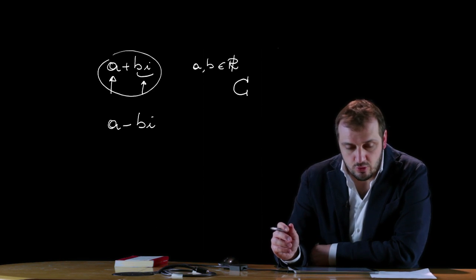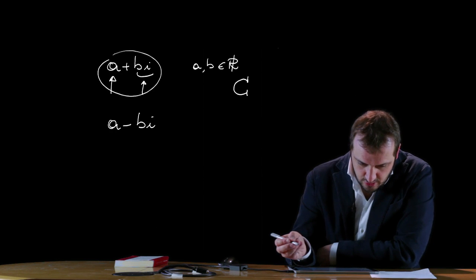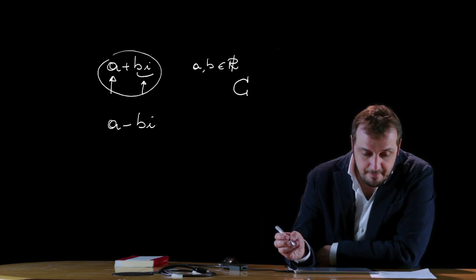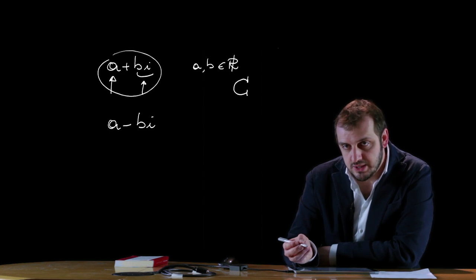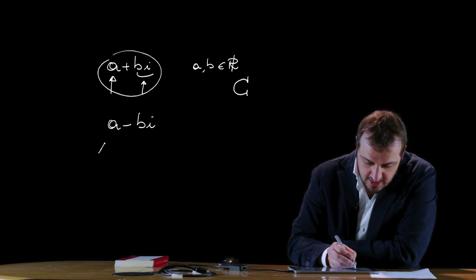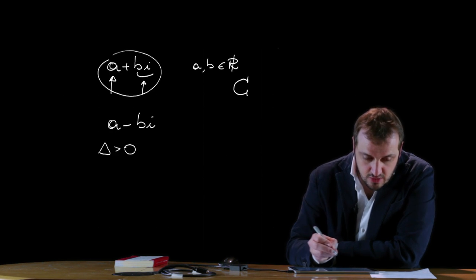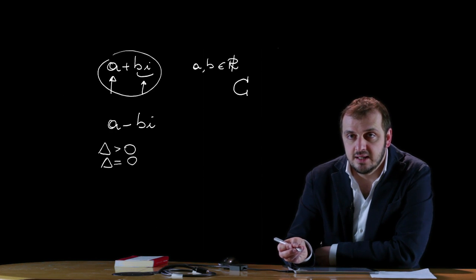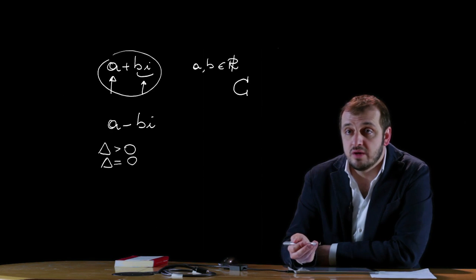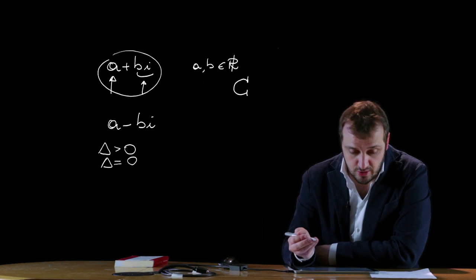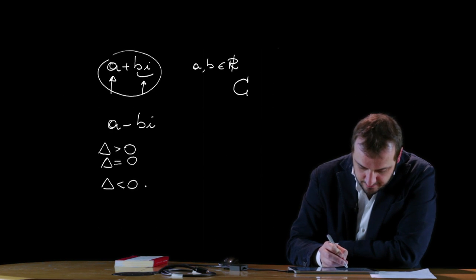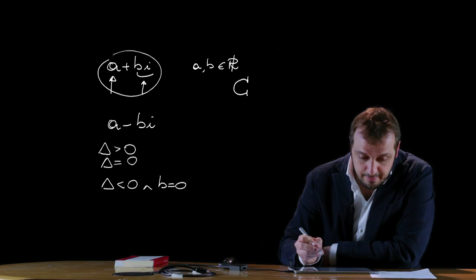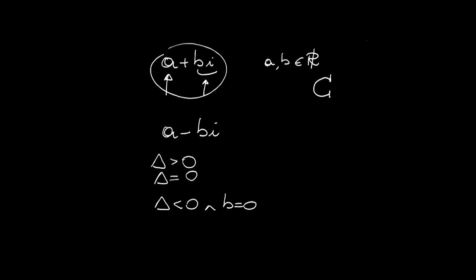Let's also define other properties of complex numbers. In the set C of complex numbers, all second-degree equations always admit two solutions, either distinct or coincident. We already saw that for a quadratic equation: if the discriminant delta is greater than zero, there are two real and distinct solutions; if delta equals zero, two real and coincident solutions. Now in the complex field: if delta < 0 and B = 0, we have two imaginary and opposite solutions; if delta < 0 and B ≠ 0, we have two complex conjugate solutions.